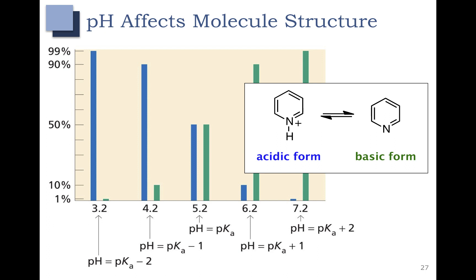When pH is equal to pKa, we have 50% dissociation. Let's look at this example where we have an acidic form of a compound and a basic form. This compound has a pKa of 5.2. So at a pH of 5.2, we are going to have 50% of the acidic form and 50% of the basic form. That only happens at a pH of 5.2 because, according to the Henderson-Hasselbalch equation, when your concentration of acid equals the concentration of conjugate base, that's when pH equals pKa.